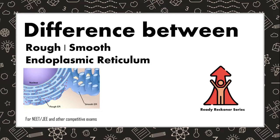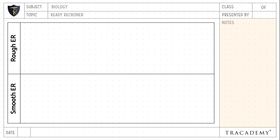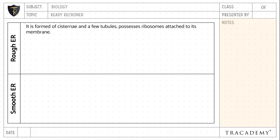In this video, let's understand the difference between rough and smooth endoplasmic reticulum. Rough endoplasmic reticulum is formed of cisternae and a few tubules, and possesses ribosomes attached to its membrane. Whereas smooth endoplasmic reticulum is formed of vesicles and tubules and does not have ribosomes on its membrane.